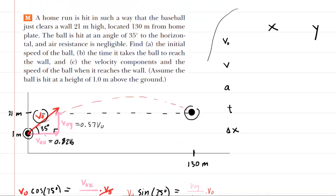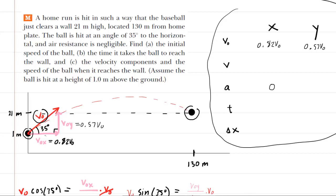Now we fill in all known information in a table. In the x-direction, the initial velocity is 0.82 V-naught. In the y-direction, the initial velocity is 0.57 V-naught. The acceleration in the x-direction is zero — there's no force acting horizontally. In the y-direction, gravity causes an acceleration of negative 9.8 meters per second squared. The displacement in the x-direction is 130 meters.